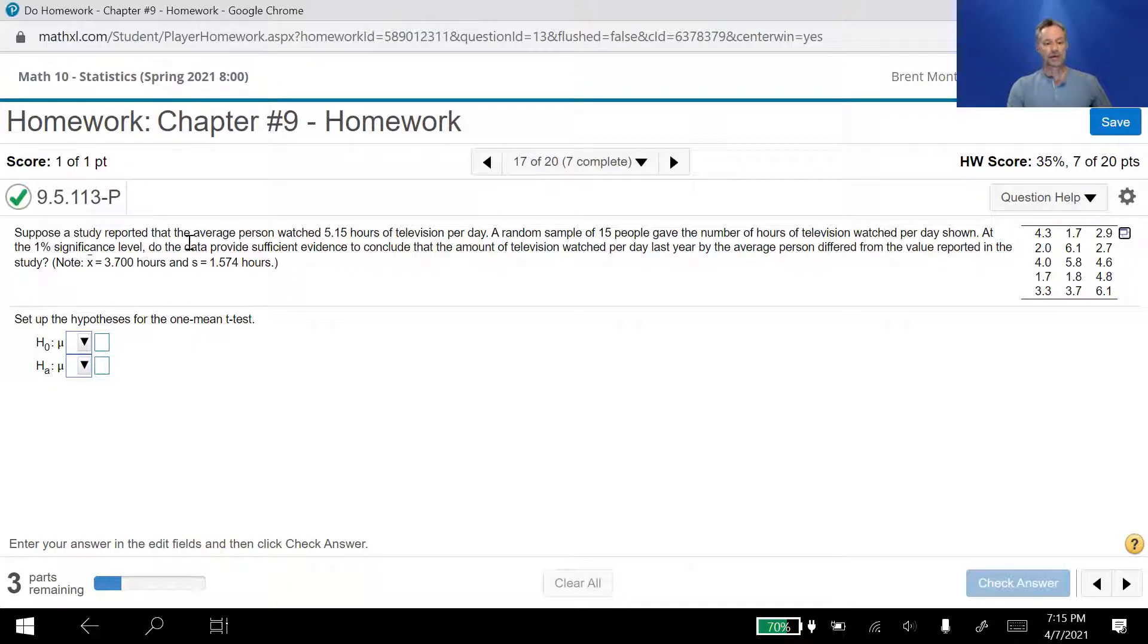Suppose a study reported that the average person watched 5.5 hours of television per day. Let's start with that, and let's do mu is the claim that it's 5.15 hours. A random sample of 15 people, that's N, gave the number of hours of television watched per day shown at the 1% significance level. That's alpha. So this 1% significance level is our probability of making a type 1 error or rejecting a true null hypothesis.